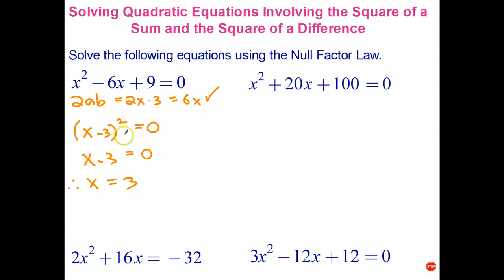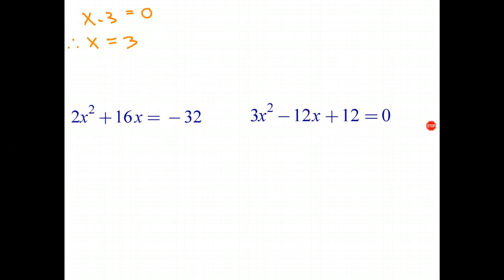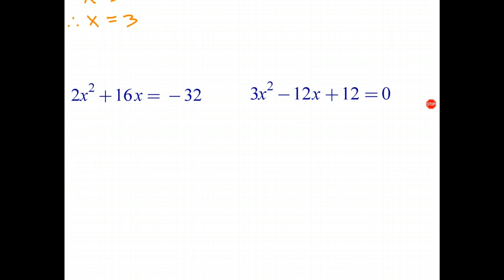The only number that makes that equation true is x equals 3. You could sort of say we have two solutions, x equals 3 and x equals 3. But of course, because it's the same solution, we really only have one. I'm going to scroll down and try this one.